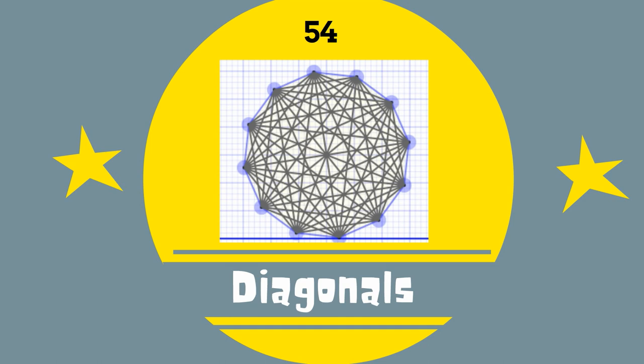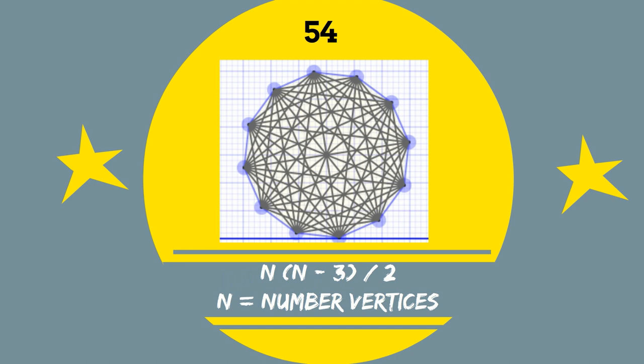A dodecagon has 54 diagonals. You can find the number of diagonals by using n times (n-3) divided by 2, where n is the number of vertices.